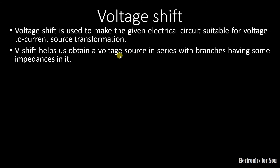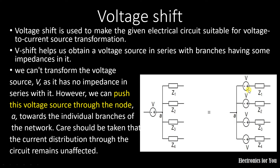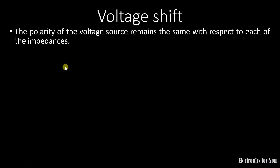This voltage shift generally helps us to obtain a voltage source in series with branches having some impedances in it. Now consider this example. Here this voltage source V is in series with the parallel combination of these impedances. The equivalent circuit, as per the voltage shift rule, is that this voltage source is individually distributed to these impedances and at node A it is pushed inside the node and distributed to each and every impedance. The care should be taken that the current distribution through the circuit remains unaffected, meaning the voltage polarity should not change for the impedances.